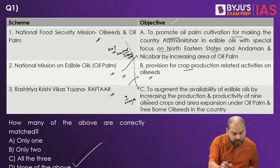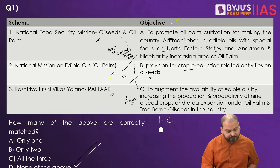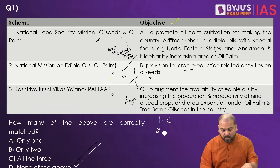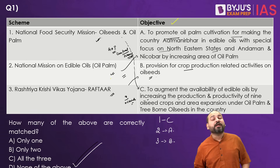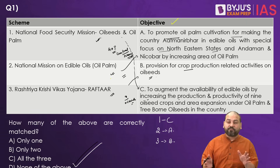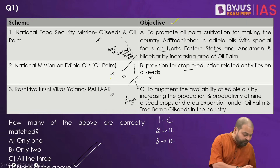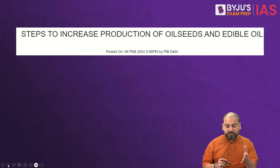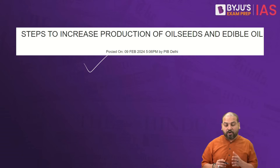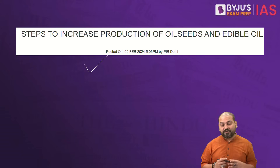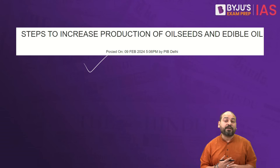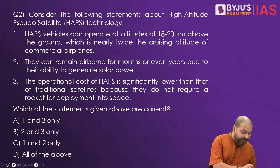The objectives are there but for scheme one it should have been C, for two it should have been A, and for three it should have been B — then it would have been correct. This is a news item that came today on PIB, as you can see, about the steps to increase production of oil seeds and edible oil.